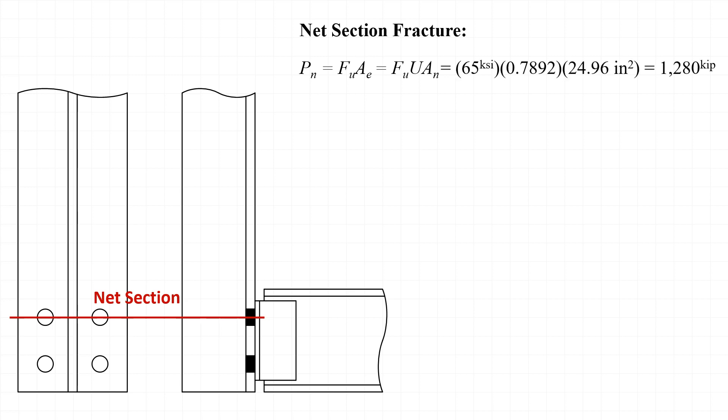Substituting those values in for our net section fracture strength, we take 65 ksi times U of 0.7892 times the net area of 24.96 inches squared, and we end up with a nominal strength Pn of 1,280 kips. Applying the resistance factor of 0.75 for a net section fracture, we end up with a design strength, φPn of 960.3 kips.